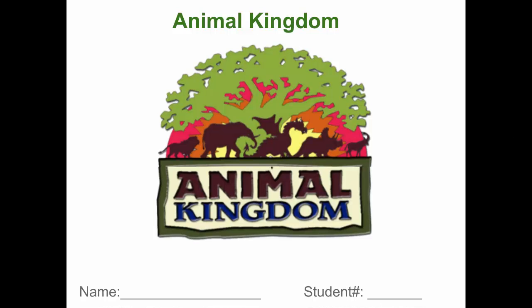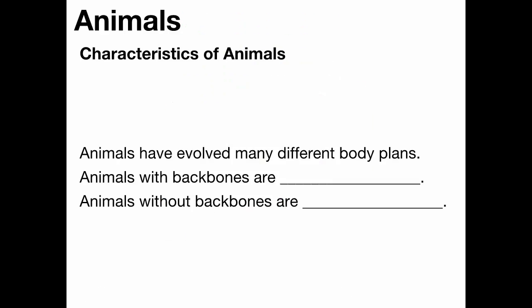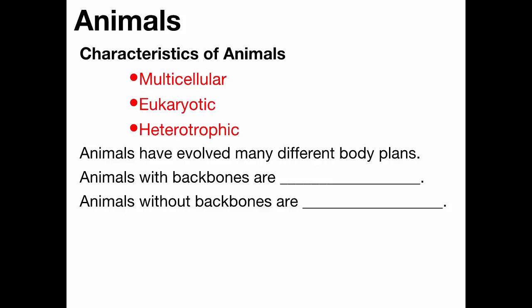So what are the general characteristics that all animals have? We call them heterotrophs. They're also multicellular eukaryotes. So animals are multicellular eukaryotic heterotrophs.